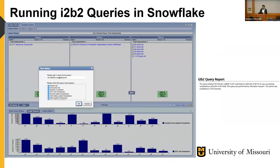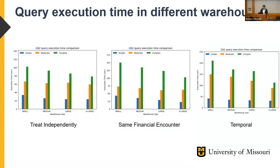I also ran a query with more concepts with all result types enabled — patient set, encounter set, top 20 medications, diagnosis, timeline, everything — and it took only 218 seconds. I created queries ranging from two to eight facts and ran them across different virtual warehouses. For temporal queries it took about 100–200 seconds, and for complex queries with eight to nine concepts it took about 150 seconds on small warehouses. Using larger warehouses reduced the query execution time.